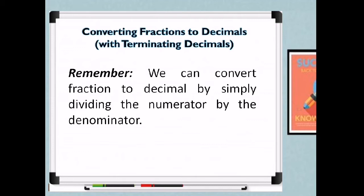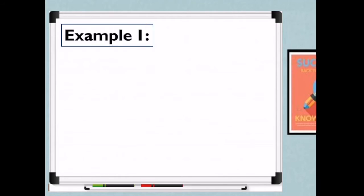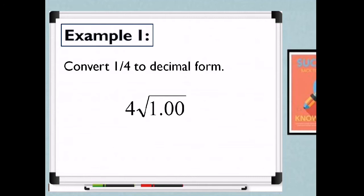We will have 4 examples for terminating and non-terminating decimals. Let's start with Example 1: Convert 1/4 to decimal form. Again, we need to convert 1 fourth to decimal form. The denominator 4 will be our divisor and the numerator 1 will be our dividend. So that is 1 divided by 4.